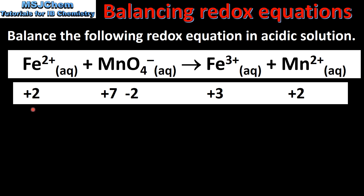The first step is to assign oxidation states to each of the species. Starting with the Fe²⁺ ion which has an oxidation state of +2. Next we have the Mn which has an oxidation state of +7. The O has an oxidation state of -2. The Fe³⁺ ion has an oxidation state of +3 and the Mn²⁺ ion has an oxidation state of +2.